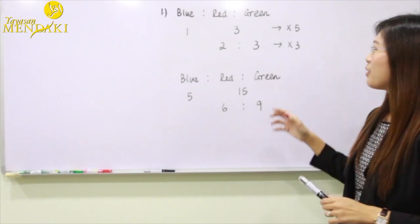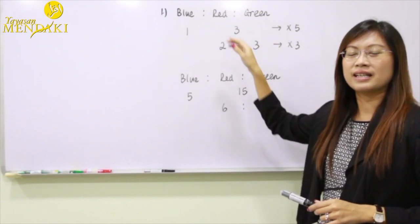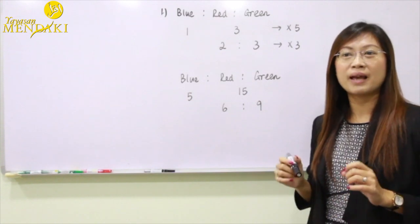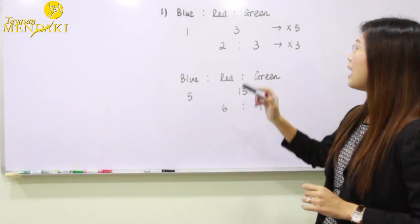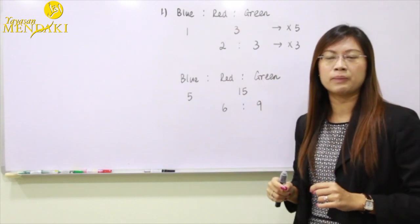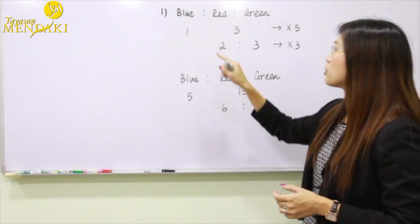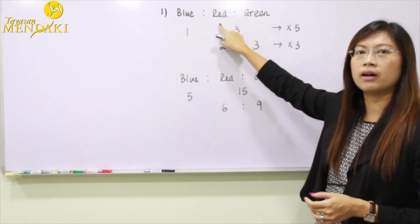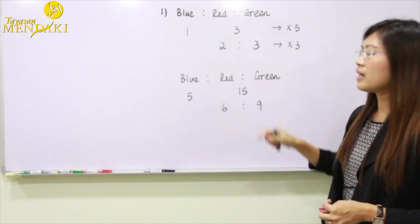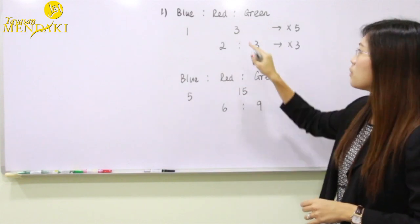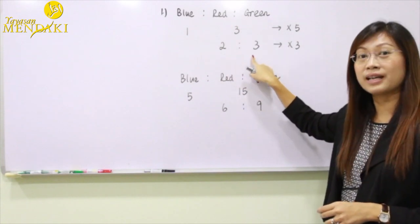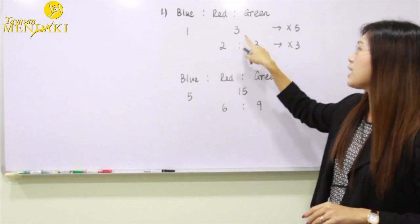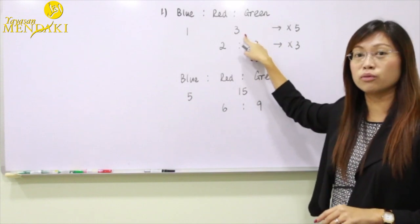To solve question one, since one quarter of the straws are blue, the remaining three quarters are red and green. We express this as a ratio of one is to three, where three units represent the total number of red and green straws. The question also states that the ratio of red to green straws is two is to three, which adds up to a total of five units representing the red and green straws.